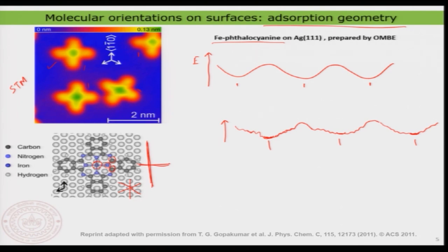Finally, taking everything together: the molecule orientation and molecule-surface orientation together define the adsorption energy of the molecule on the surface, which ultimately determines the pattern achieved on the surface. With this I conclude this lecture. In the next lecture, we will see further aspects of molecular adsorbates on surfaces, and also discuss a few more examples of molecular adsorbates formed at the solid-liquid interface. Thank you very much.